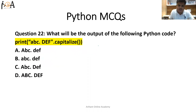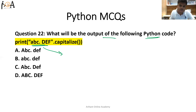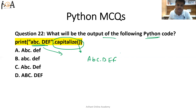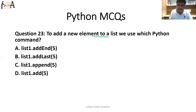Question 22: what will be the output of the following Python code — print('abc.def'.capitalize())? This is a string written inside double quotes. The capitalize() function converts only the first letter of the string to uppercase if it is lowercase. So the output would be 'Abc.def', capitalizing only the first letter. That is why option A is the correct answer.